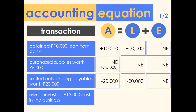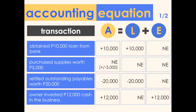Transaction four: owner invested 12,000 pesos cash in the business. There is an increase in cash and in turn assets of 12,000 pesos. Since this transaction involves the owner — an investment to be more specific — there is a corresponding increase in equity for the same amount. So the impact is a 12,000 peso increase in assets, no effect on liabilities, and a 12,000 increase in equity. Both sides are equal.